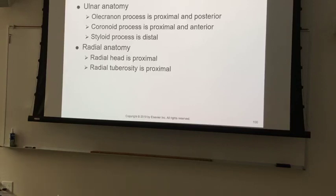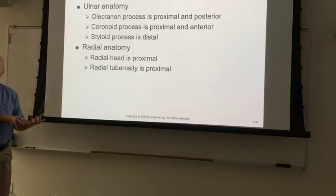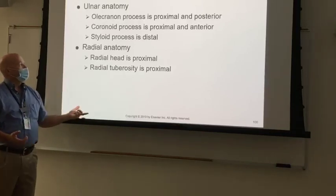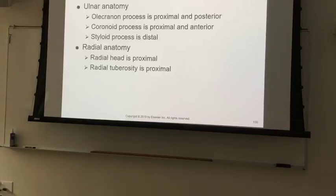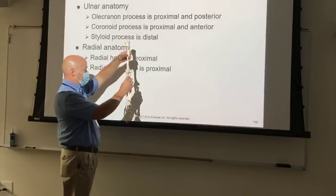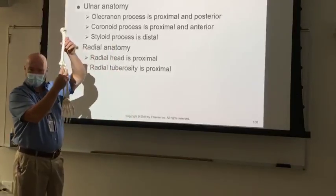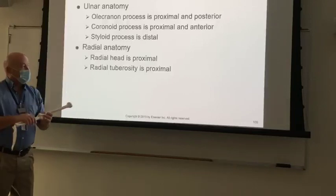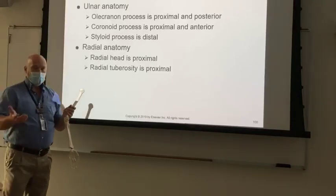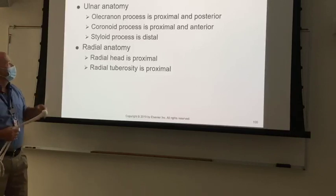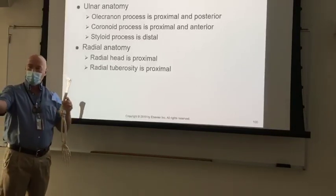On the ulna, you've got the olecranon process, and the olecranon process is what articulates and gives you flexion and extension motion. The olecranon process is what receives the distal end of the humerus — the condyles — so you can flex and extend your elbow. The coronoid process is the most anterior portion of that. The styloid process is on the distal end; you've got a styloid process on both the radius and the ulna.